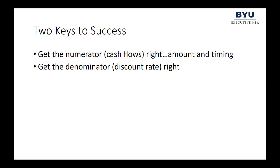If that's the case, then the two keys to success in a corporate finance setting — bond valuation, stock valuation, capital budgeting tools — if they all boil down to these two equations, then there are only two keys to success. The first key is get the numerator right: you have to get the cash flows right, meaning both the amount and the timing. The second key, which we've almost completely ignored to this point, is equally important — you've got to get the denominator right. You have to get the discount rate, the R, correct whenever you're applying these tools.